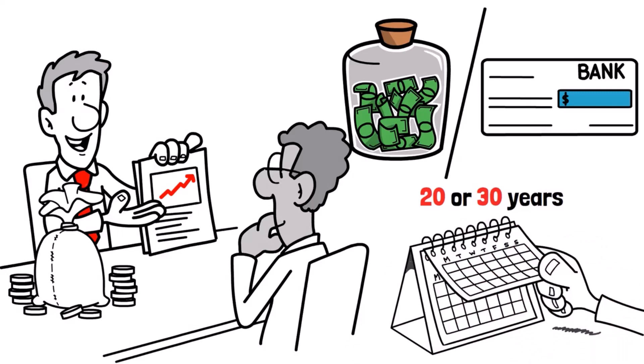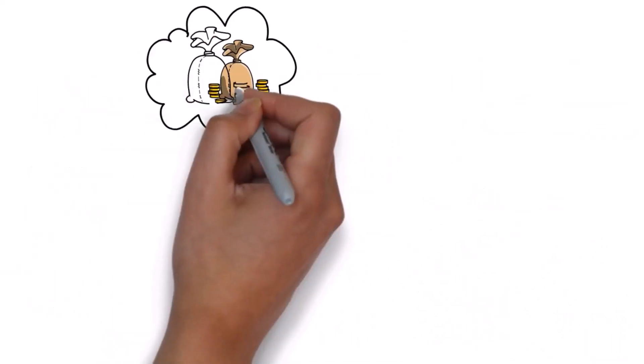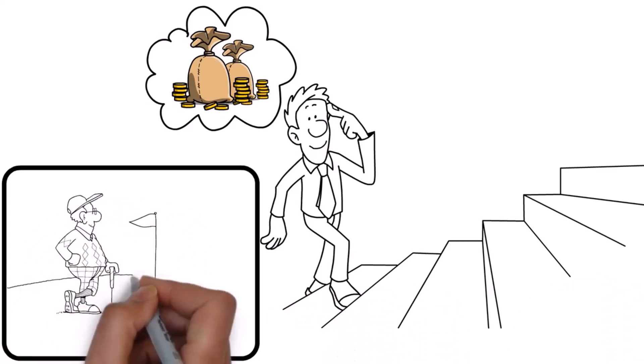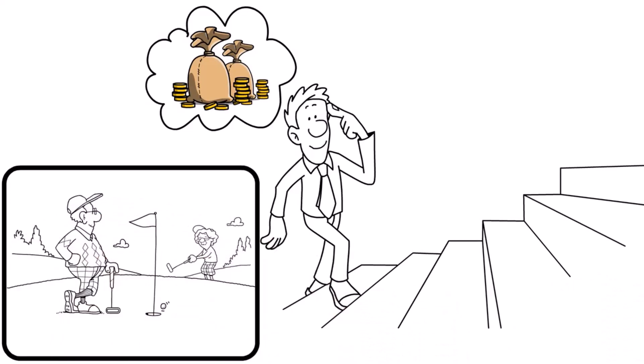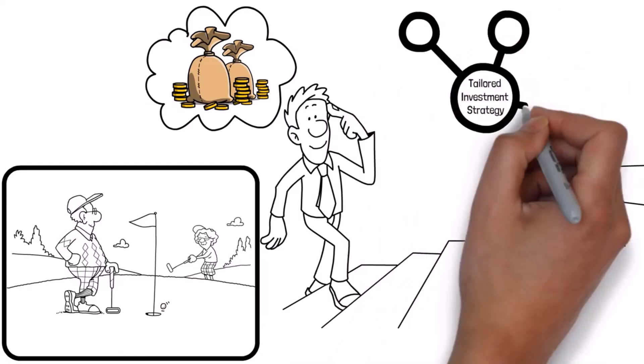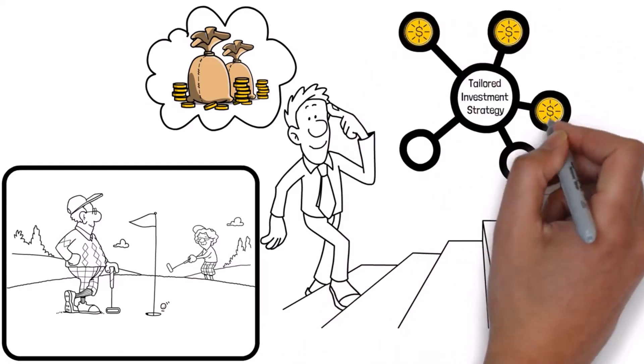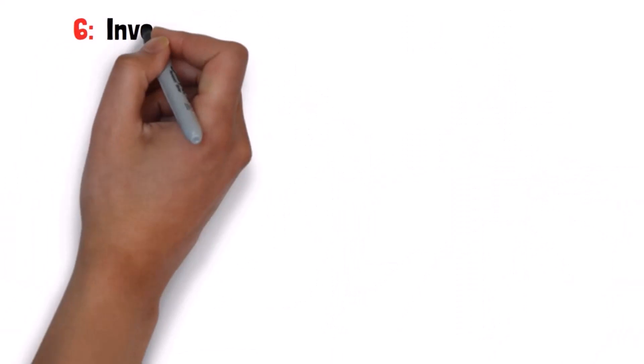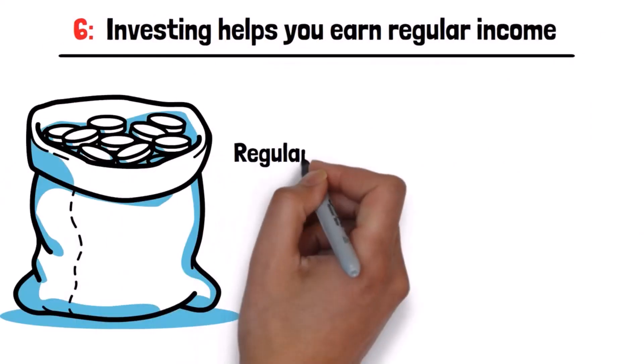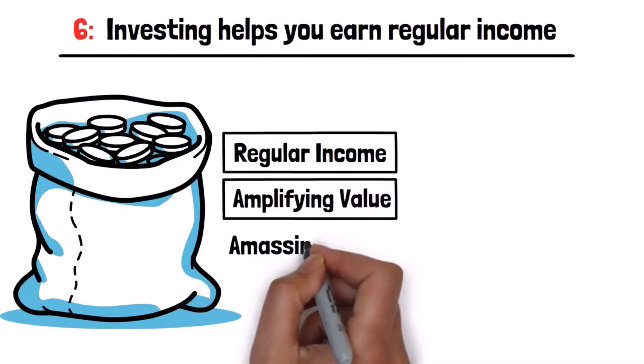To begin investing for retirement, work backward from a set savings goal. Consider when you want to retire and the lifestyle you envision. Based on this, create a tailored investment strategy that aligns your current finances with your retirement objectives.